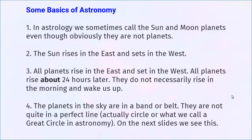The most obvious great circle is the horizon if you were out in the middle of the ocean with no land. If you were on a small boat on the ocean, far enough from land, fairly calm, you would see a circle around you where the ocean meets the sky. That is the celestial horizon — an example of a great circle. Our theoretical framework for vibrational astrology involves understanding what great circles are. Planets are like in a belt, not in a perfect great circle, but in a belt.